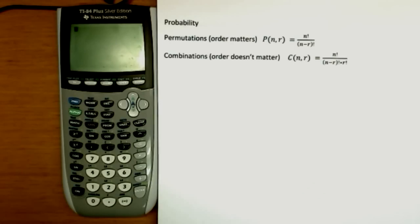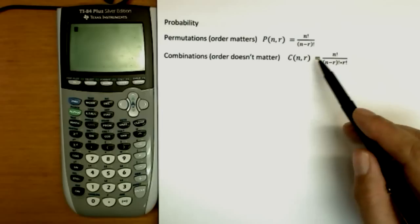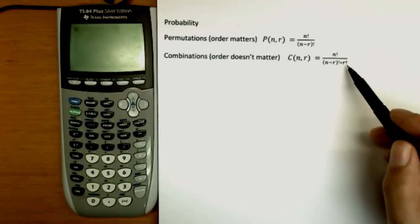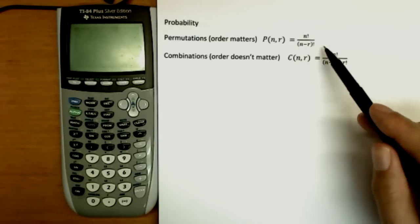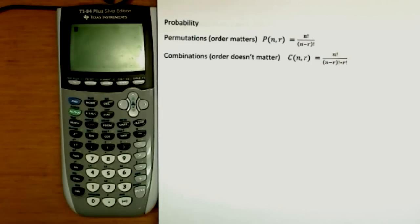Combinations - order that we're choosing the things doesn't matter. It's written in math books as C of N choose R. N factorial over N minus R factorial times another R factorial on the bottom. We're not going to really use these formulas much to calculate things. I'm just going to show them for our discussion.